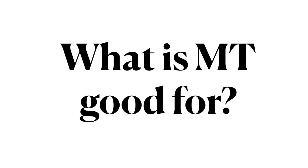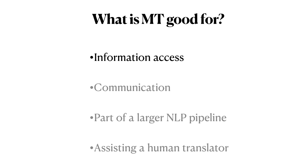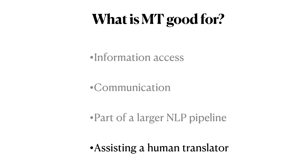So, what is machine translation good for? Probably the most common usage is for information access: you speak one or more languages, there's content in a different language you can't fully access, and you want to get that information. Or you want to communicate — text chatting or voice-to-voice — with someone you don't share a comfortable common language with. There are also plenty of cases where machine translation is used behind the scenes as part of a larger NLP pipeline that you might not even be aware of. And finally, there are plenty of cases where machine translation is used to assist a human translator in doing their job.